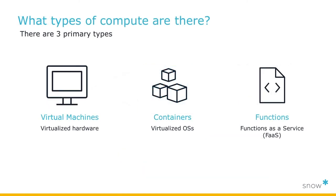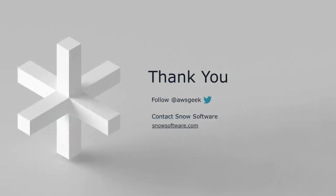Those are the three primary types of compute available to you in the cloud: virtual machines, containers, and functions. In my next video, I'll talk more about the different cost options available for cloud compute, including spot, on-demand, and reserved. I hope you'll join me for that video. As always, if you have any comments, feel free to reach out to me on Twitter, where I'm known as awsgeek, and be sure to visit snowsoftware.com. Thanks.